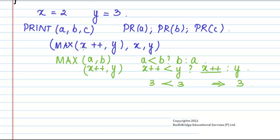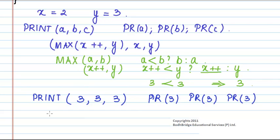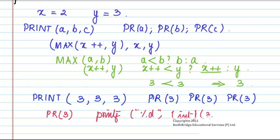These arguments will be replaced in the print macro. That is print(3, 3, 3) — the result of the max macro is 3, the value of x is now 3, and the value of y is 3. The definition of print expands to pr(3), pr(3), and pr(3). The definition of pr is printf("%d", a), so 3 will be printed three times. So we get 3 3 3 in the output.